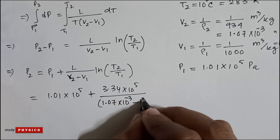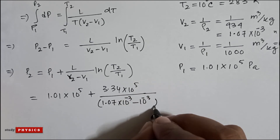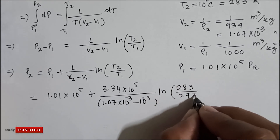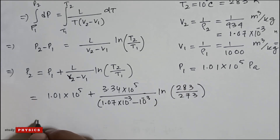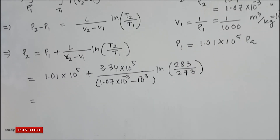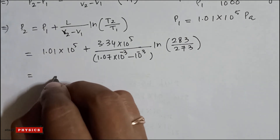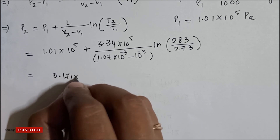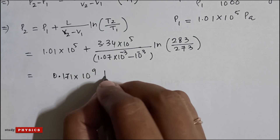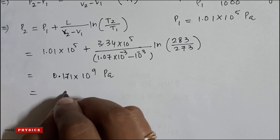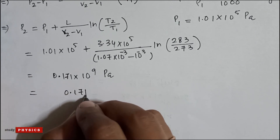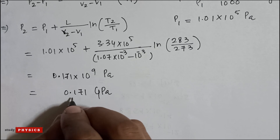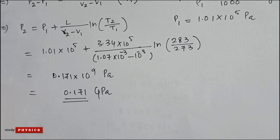Continuing: minus 10 to the power minus 3, times ln of 283 divided by 273. After evaluating, this value will be 0.171 into 10 to the power 9 Pascal, which is 0.171 Giga Pascal. So the correct answer is 0.171 Giga Pascal.